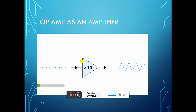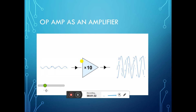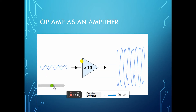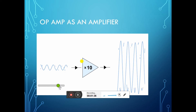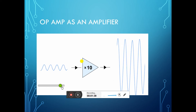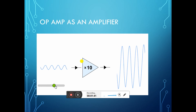What do we mean by an amplifier? If the amplifier amplifies 10 times the input signal, as shown in the diagram, the input amplitude is small. Even when the amplitude is increased, the output amplitude increases up to 10 times.